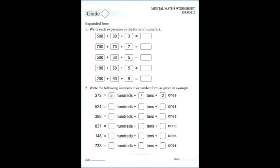Now the second question on the worksheet: write the following numbers in expanded form as given in the example. Let's take the number 524. How many hundreds do we have? It is 5 — we have 5 hundreds. Write 5 in the hundreds box. How many tens do we have? We have 2 tens — write 2 in the tens box. And how many ones do we have? We have 4 ones — write 4 in the ones box.